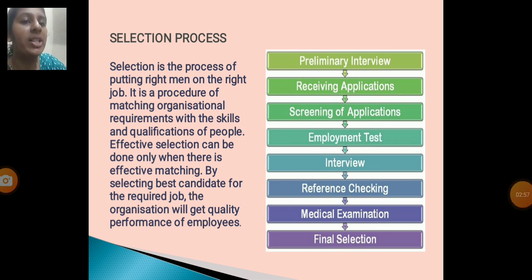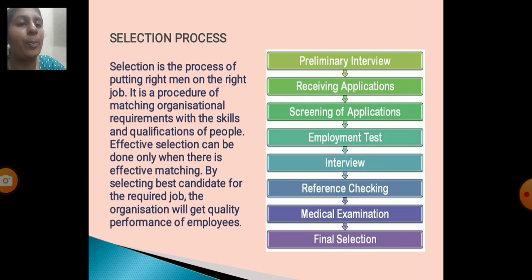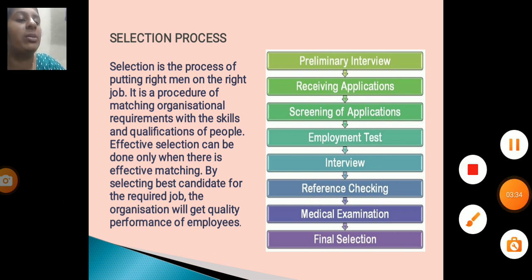Selection process. Selection is a process of putting the right man on the right job. It is the process of matching organizational requirements with the skills and qualifications of people. Effective selection can be done only when there is effective matching. By selecting the best candidate for the required job, the organization will get quality performance of employees. The process includes: primary interview, receiving application, screening of application, employment test, interviewing, reference checking, checking, medical examination, final selection, and placement.